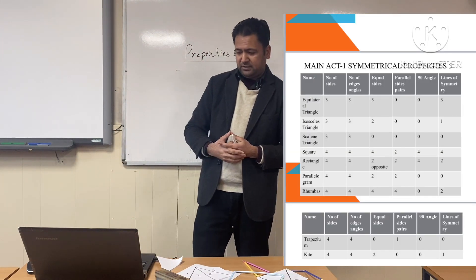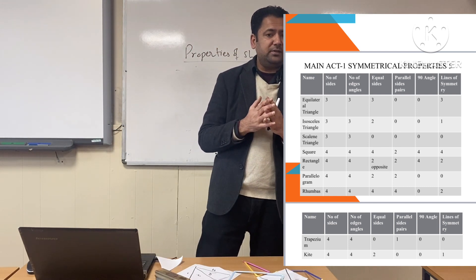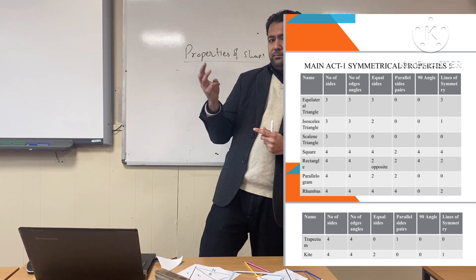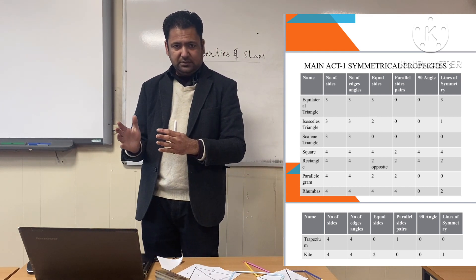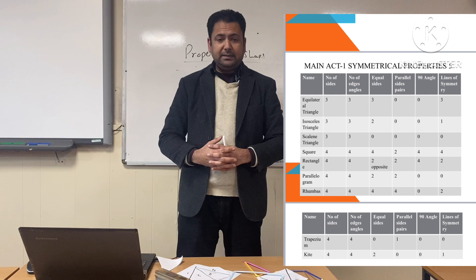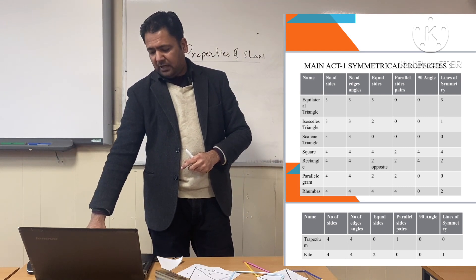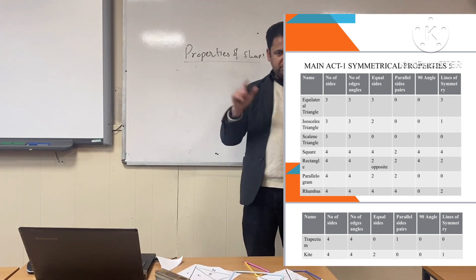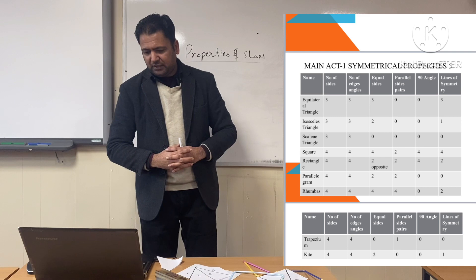This is data you already know from your previous classes and previous years. We have different geometrical shapes. The first geometrical shape is a triangle — a triangle is made by three sides and three angles. We have three types of triangles: equilateral, where all sides and all angles are equal; isosceles, where two sides and two angles are equal; and scalene, where no angle is equal. Then we have square, rectangle, parallelogram, rhombus, trapezium, and kite. You have three to four minutes to look at and revise these metrical properties you already know.